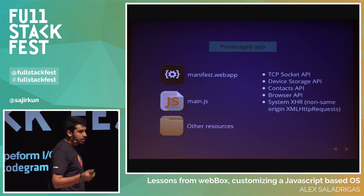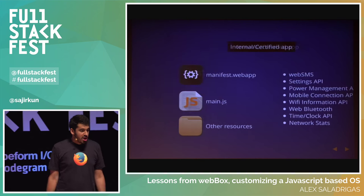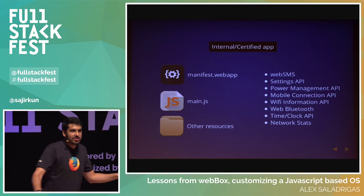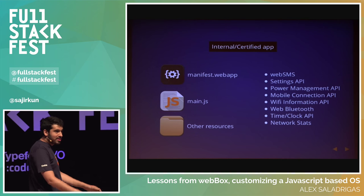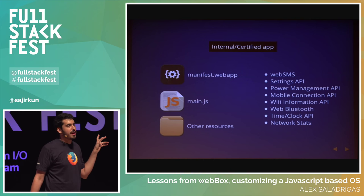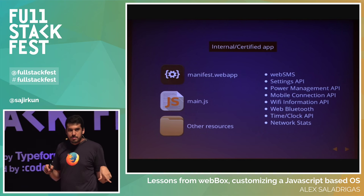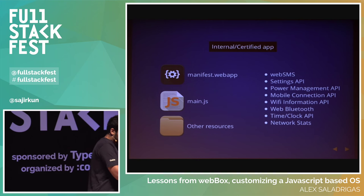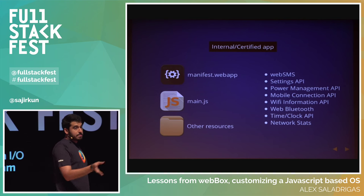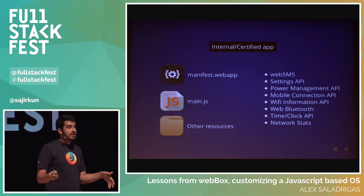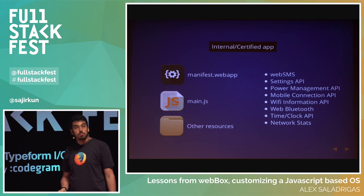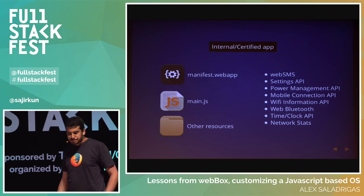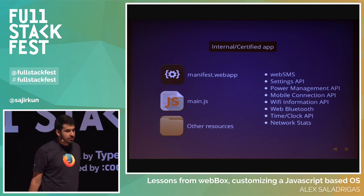And finally, you have my personal favorite type of app: the internal certified apps. These have access to everything — all the APIs, even the most sensitive ones. You can control everything from the phone with a certified app. But there's no way to actually publish one — it has to be included in the ROM. As a developer, you can push a certified app on your phone, but you cannot just publish it in the store. These apps have access to power management, mobile connections, Bluetooth, all sorts of things. But as you can see, this is the most important type if you're customizing Firefox OS for any specific hardware project.